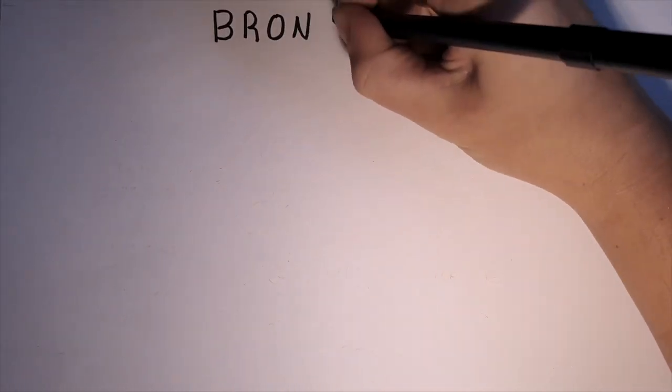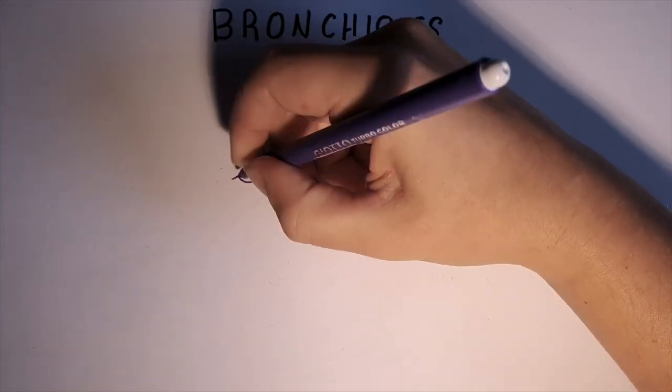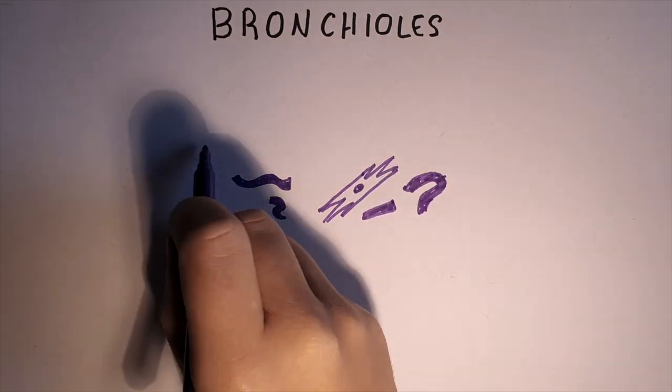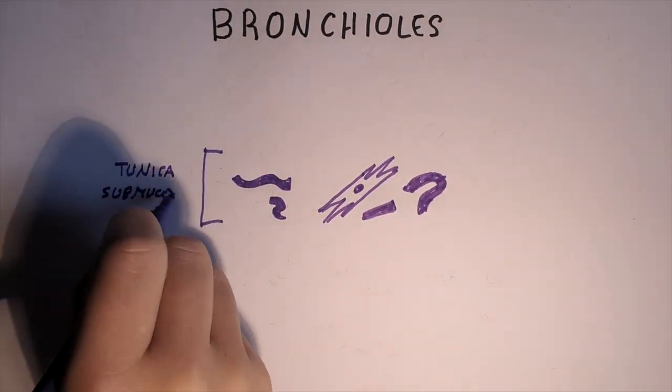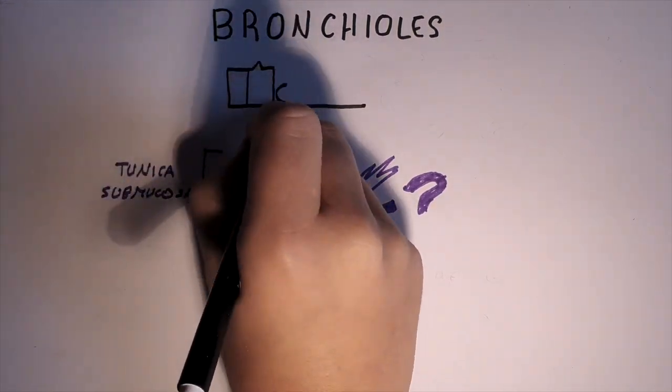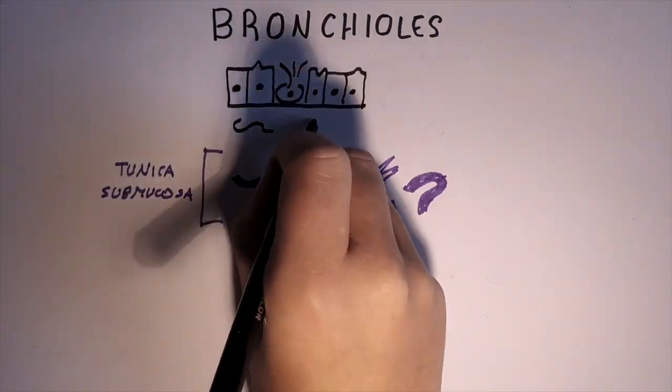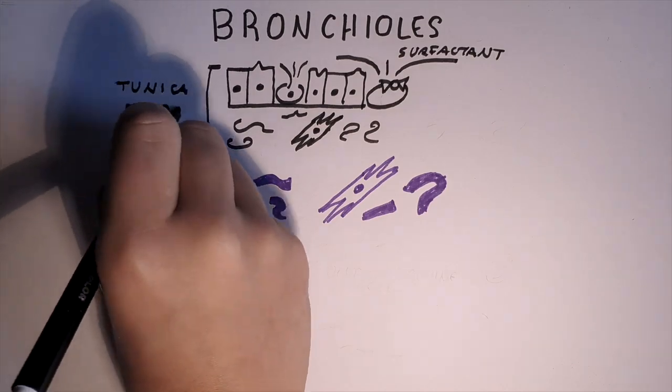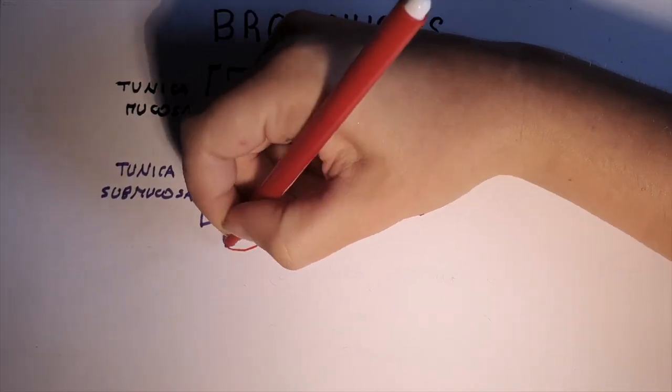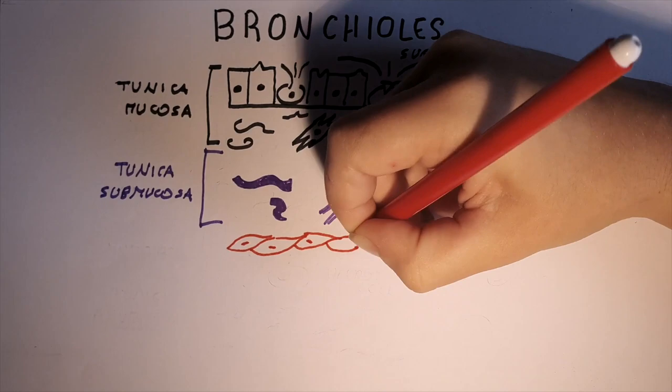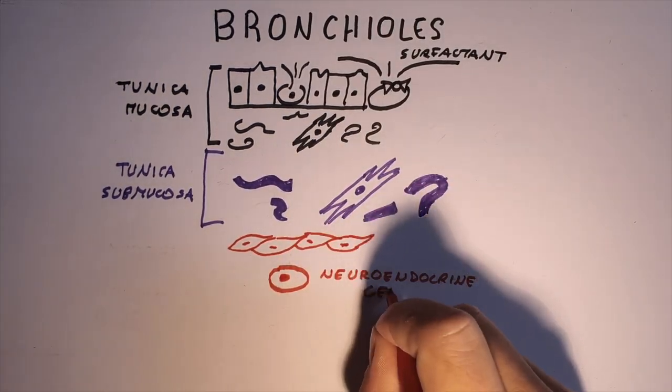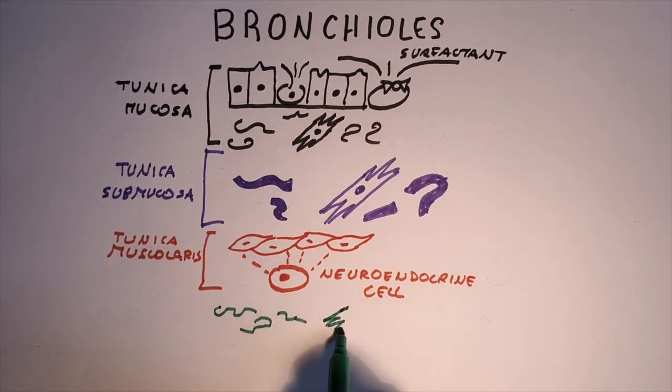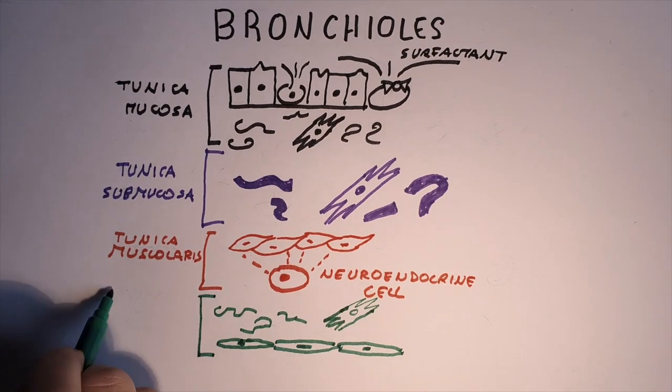Bronchioles are distinguishable in a cross-section because they do not possess the cartilaginous ring nor the submucosal glands. In addition to this, we can observe a thinner simple columnar epithelium with sparse goblet cells, and a new cell type appears: Clara cells. Their role is to release a lipoproteic fluid called surfactant in order to avoid the bronchioles collapse. Furthermore, we can notice a layer of smooth muscle controlling the diameter of the tube and also its resistance. Neuroendocrine cells controlled by the autonomic nervous system are responsible for regulating the bronchial muscle tone.